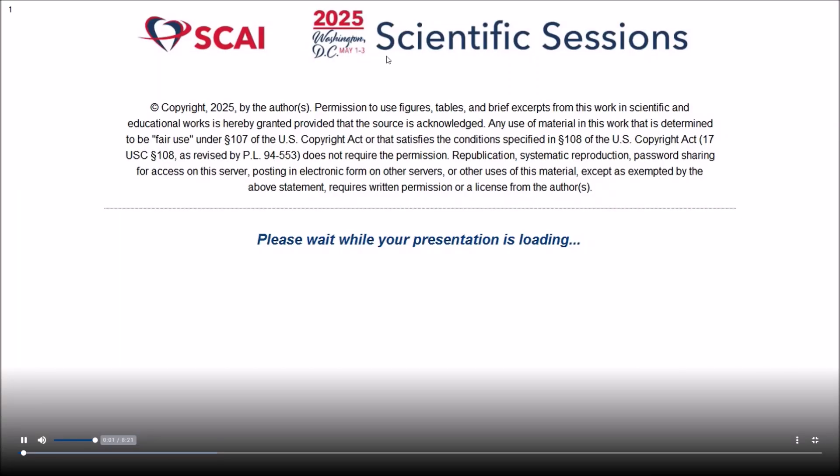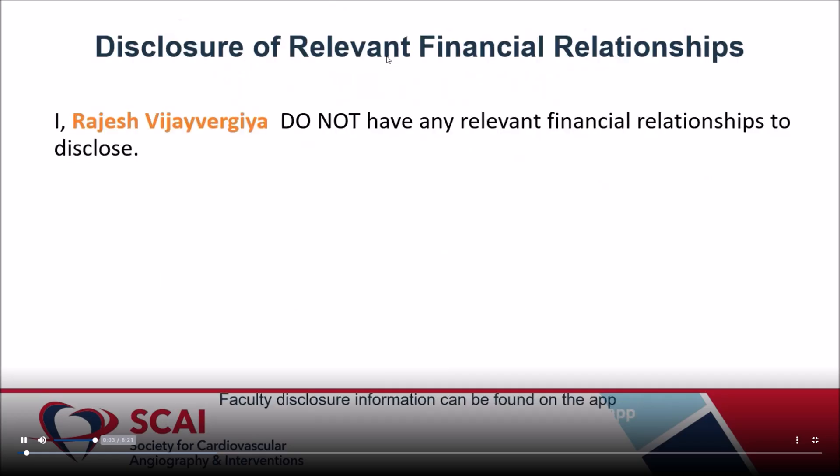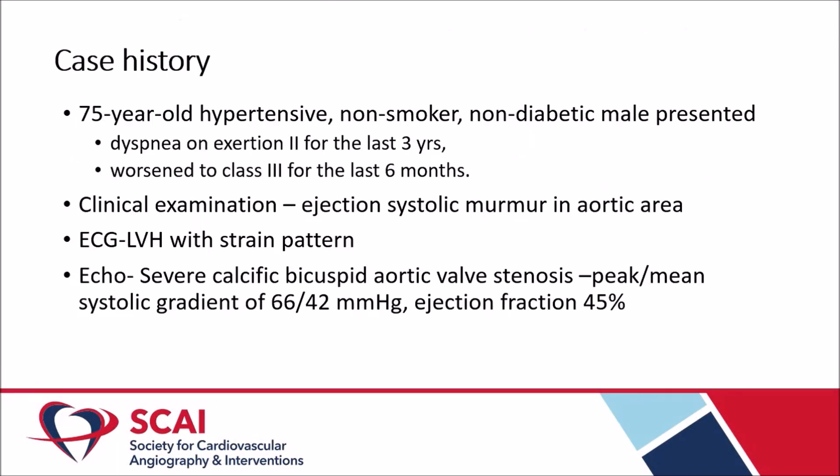Good afternoon. Nothing to disclose. My case is a 75-year-old hypertensive, non-smoker, non-diabetic male who presented with dyspnea NYHA class 2 from last year, which increased to class 3 over the last 6 months, with ejection systolic murmur in the aortic area, LBBB with strain pattern, and echo showing severe aortic stenosis with bicuspid aortic valve, peak gradient of 66 mmHg, and ejection fraction of 45%.